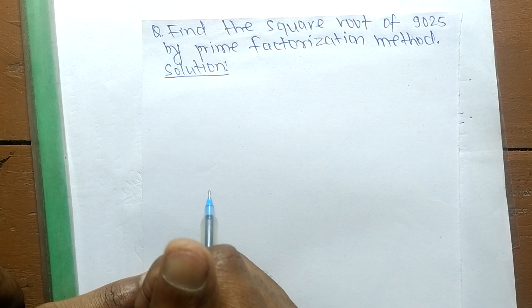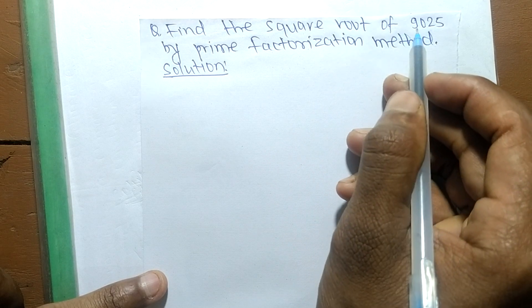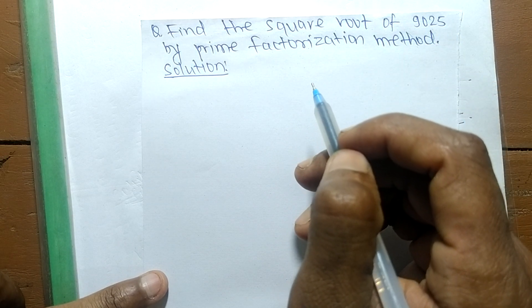Today in this video, we shall learn to find the square root of 9025 by the prime factorization method.